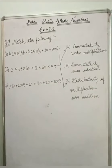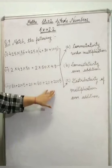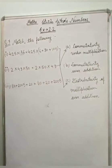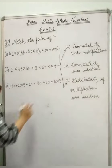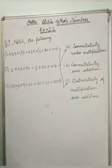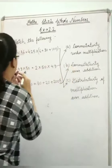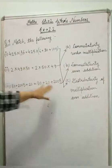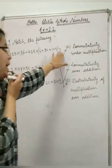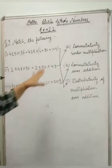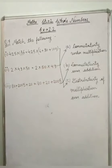Now, 18 plus 2005 plus 20 equals 18 plus 20 plus 2005, this is commutativity over addition. So, answer of first is C, answer of second is A, and answer of third is B. I hope this exercise is understood by every student and if you have any doubt in any question, you can ask me.